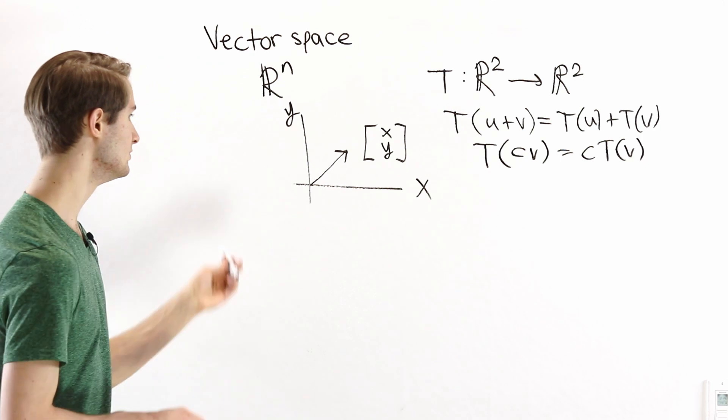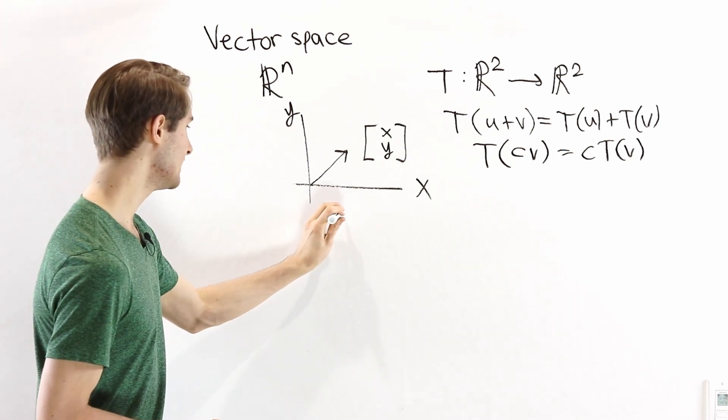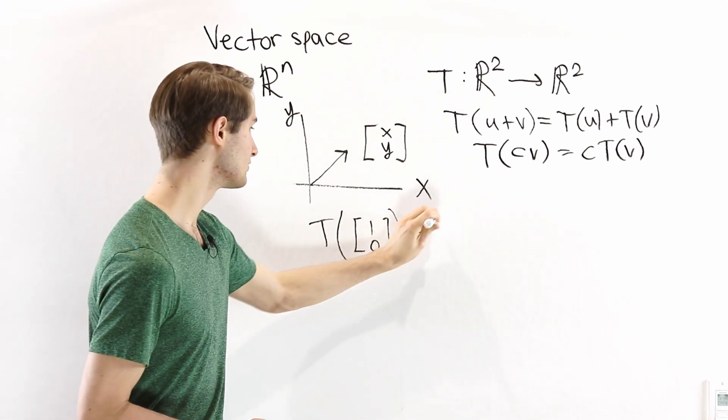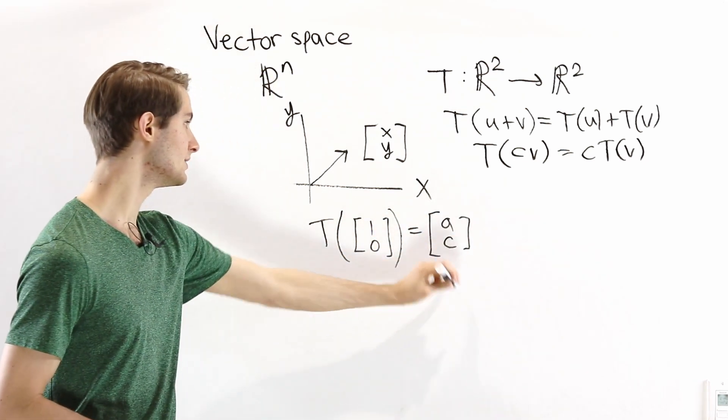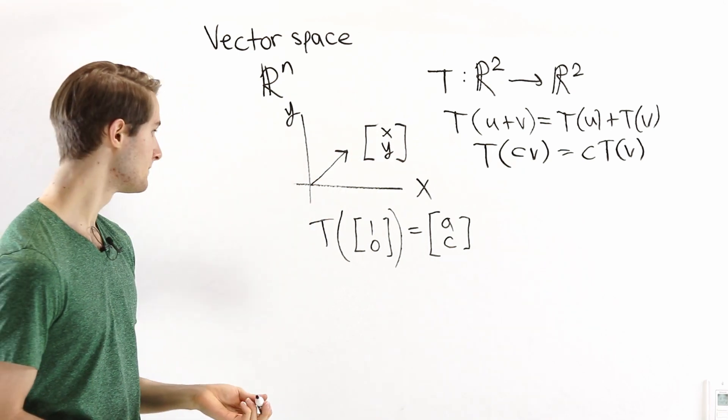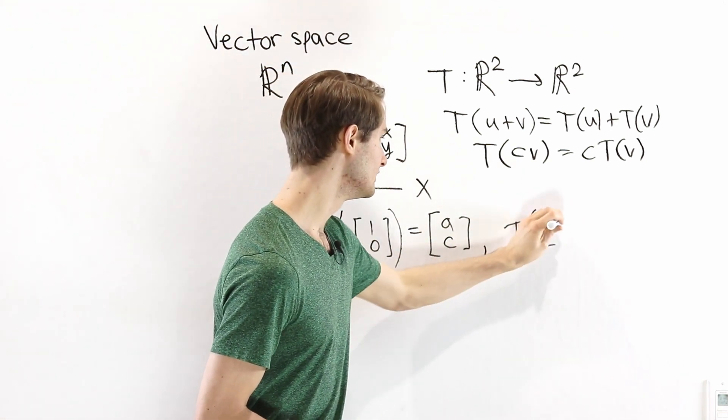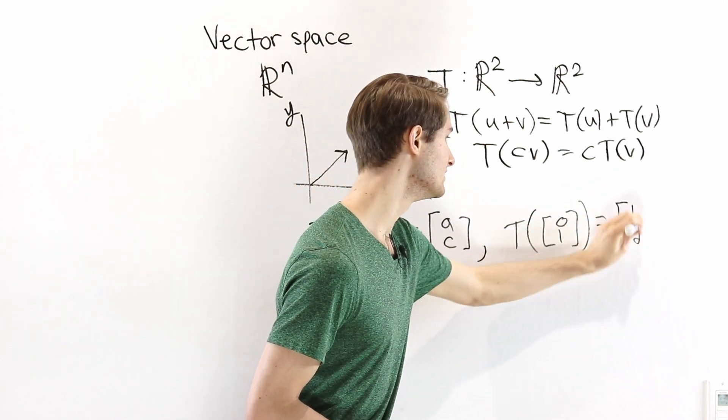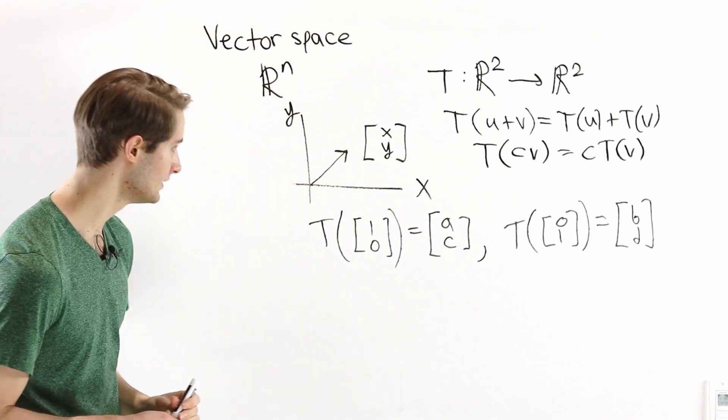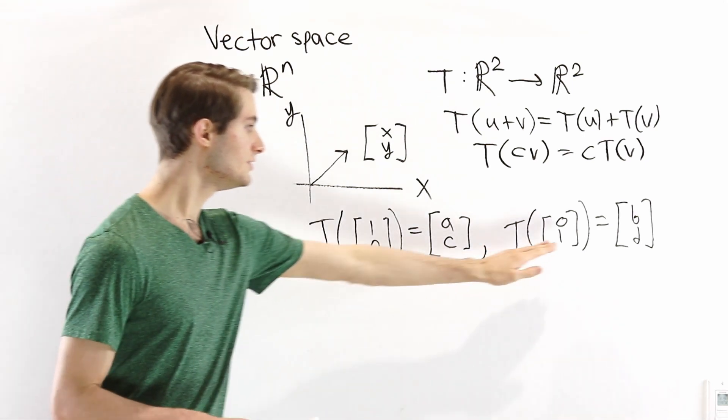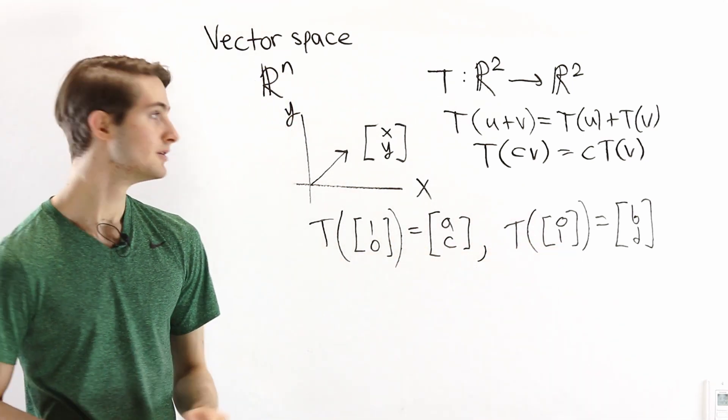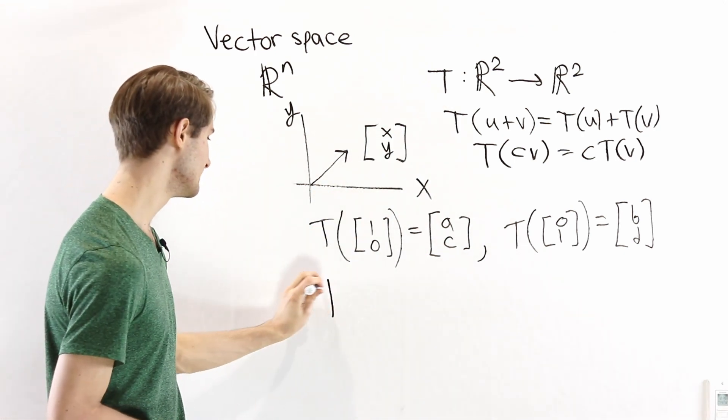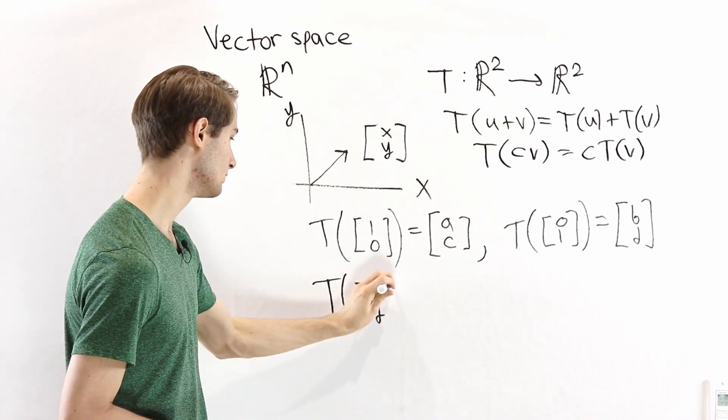Suppose I give you the following information. Let's say I tell you that if we apply T to the vector 1, 0, the result that we get is a, c, some other 2D vector. And let's say I also tell you that T of 0, 1 is b, d. And then I give you a challenge. I say, okay, I've given you these 2 values for our linear transformation T. Can you tell me what is T of the vector x, y, where x and y are any real numbers we want?